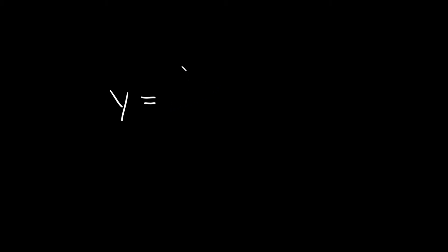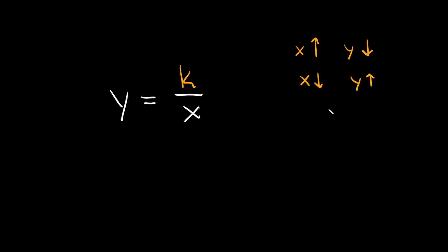Now let's go over inverse variation. Inverse variation works basically in the opposite way as direct variation. The inverse variation equation is y is equal to k over x. When x goes up, y goes down, and when x goes down, y goes up. For example, if x were doubled, y would be cut in half. If x got cut into a third, y would go up three times. It still moves proportionally, just in the opposite direction.